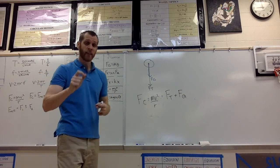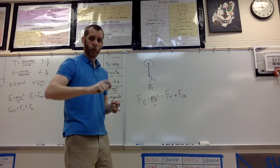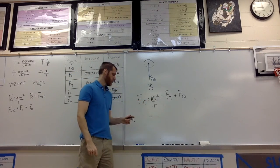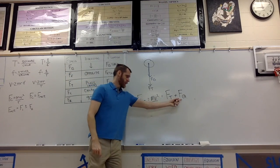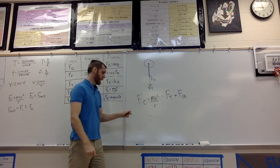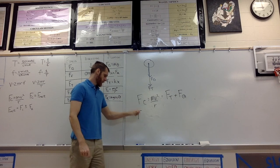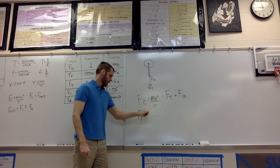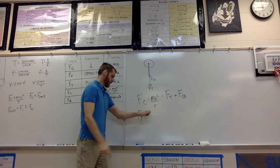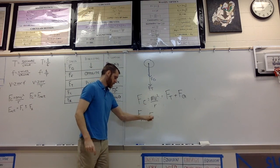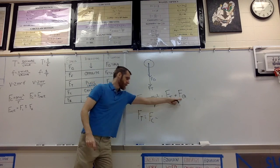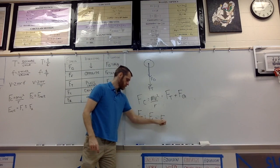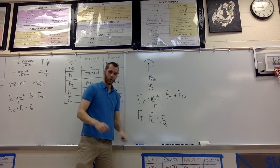Now if I want to find the tension in the rope when the ball is at the top, I'll solve for Ft. I'll subtract Fg from both sides. So Ft equals Fc minus Fg.